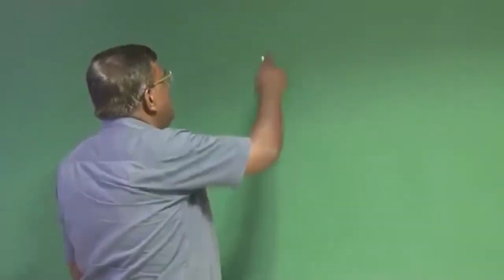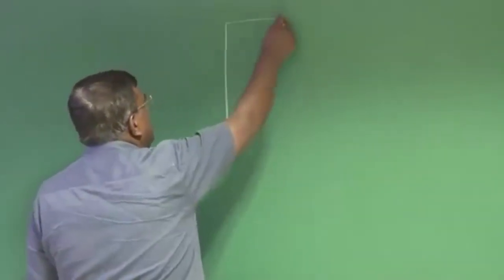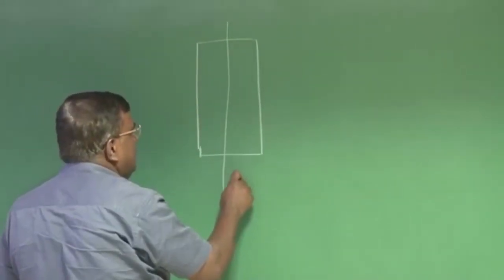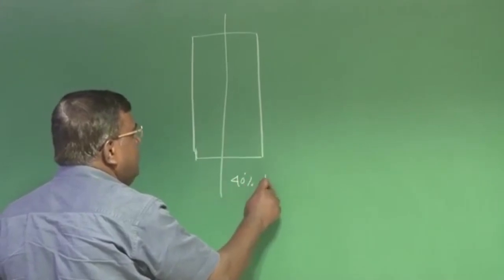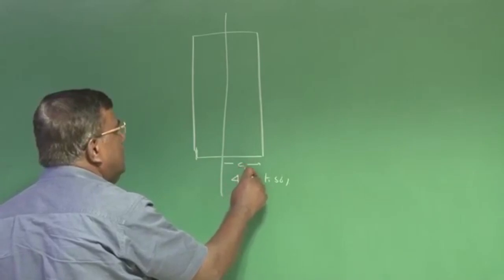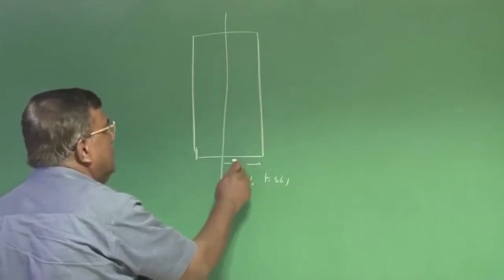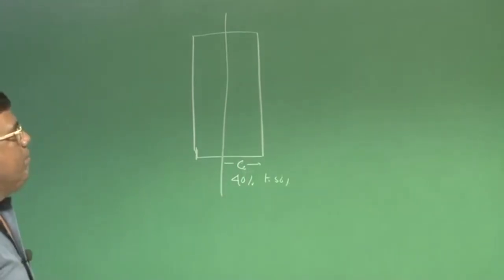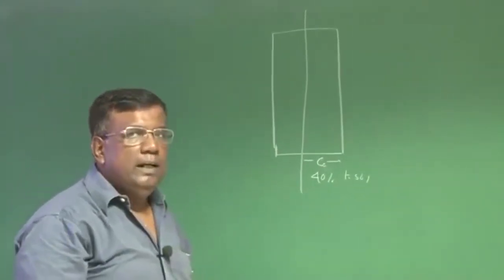Good morning friends. We are continuing our lecture on elevator design. At a conceptual stage, what we have realized is that if I have a horizontal tail like this, the elevator chord can be roughly 40 to 50 percent of the chord. That is not a bad choice to start with.